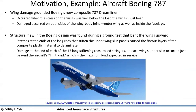Here's a motivation from an example: wind damage grounded the Boeing 787 Dreamliner, which was new at the time. It occurred when the stress on the wings was well below the load the wings must bear. Damage occurred on both sides of the wing body joint — the outer wing as well as the inside fuselage. That was found during a ground test, where the purpose is to bend the wing upward close to 30 to 40 feet.